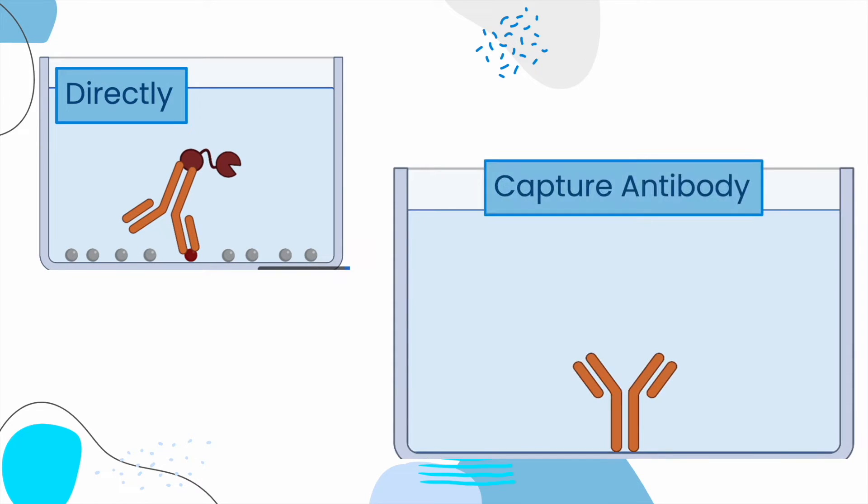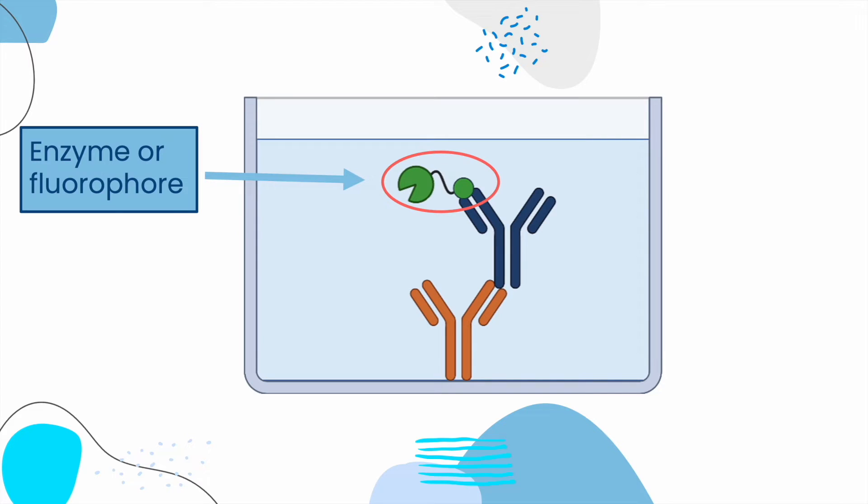In an ELISA assay, the antigen is immobilized to a solid surface. This is done either directly or via the use of a capture antibody itself immobilized on the surface. The antigen is then complexed to a detection antibody conjugated with a molecule amenable for detection, such as an enzyme or a fluorophore.